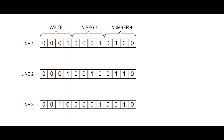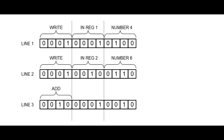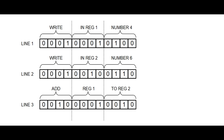Moving to the second line of code: it again starts with a write operation. The second part tells us to write into register 2, and the third part specifies the value — number 6, since 0110 in binary equals 6 in decimal. The third line of code starts with a different operation — an add operation. We add the number in register 1 to the number in register 2, and the result is stored in register 2.